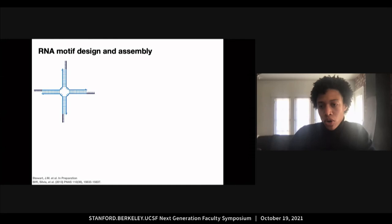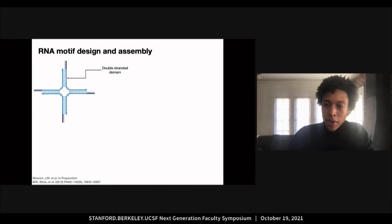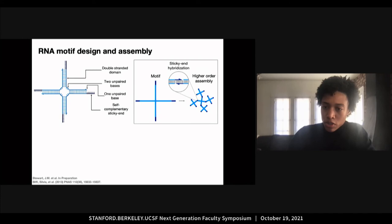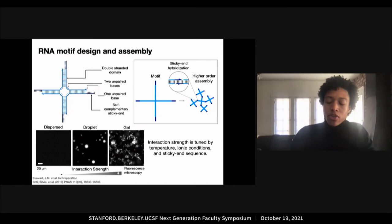To create an artificial RNA condensate system with inspiration from previous DNA motifs, I designed a motif monomer that consists of four RNA strands that hybridize to form four double-stranded domains separated by two unpaired bases at the core and one unpaired base between the double-stranded domain and the sticky ends to allow for flexibility. These sticky ends are self-complementary, allowing for individual motifs to interact and form a higher-order assembly. The interaction strength between motifs is tuned by temperature, ionic conditions, and sticky-end sequence, in which we can observe either a dispersed, liquid-like droplet, or a static gel phase as characterized by fluorescence microscopy.